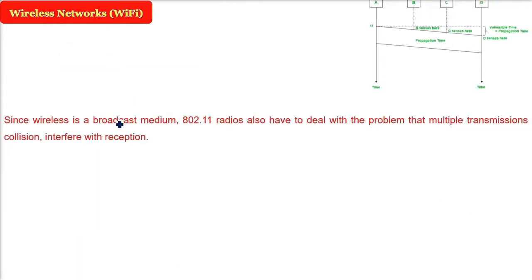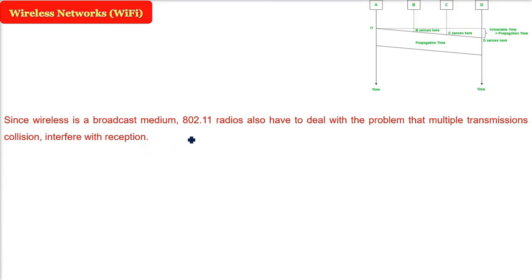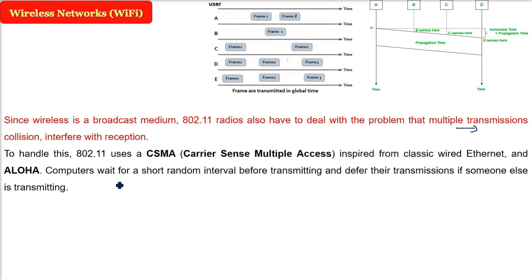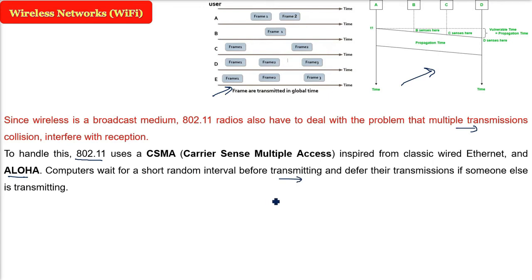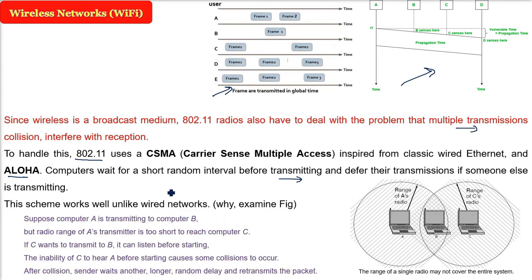Since wireless is a broadcast medium and signals go to everyone, 802.11 must deal with collision problems — two packets can collide. To handle this, 802.11 uses CSMA, Carrier Sense Multiple Access, borrowed from classic wired Ethernet (802.3) and Aloha. In this simple algorithm, a computing device waits for a short random interval before transmitting. If someone else is transmitting at that time, it waits again for the next opportunity. This scheme works well in the Wi-Fi environment.